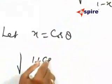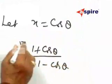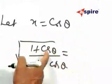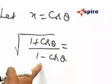1 plus cos theta under square root, 1 minus cos theta under square root. This will be 2 cos squared theta by 2, this will be 2 sin squared theta by 2.